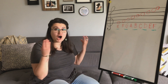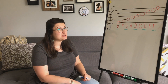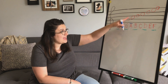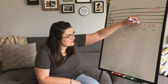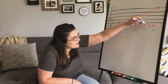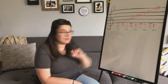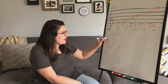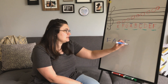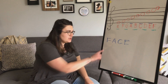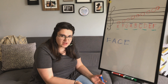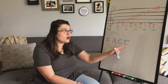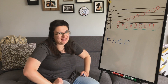Now, if we look at the ones that are left over — our notes that are in the spaces — we have F in a space, A in a space, C in a space, and E in a space. If we take those four letters, what does that spell? F, A, C, E spells the word face. And face rhymes with space. That's the order of the pitches in the spaces.